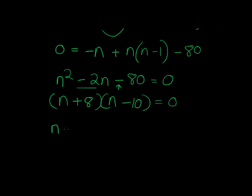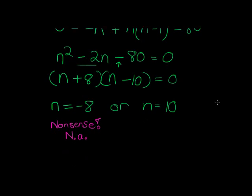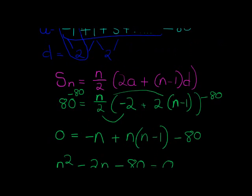Which means that N is now either equal to negative 8 or N is equal to 10. So, either I have negative 8 terms. Okay. That's impossible. This is nonsense. It makes no sense. Okay. We can't have negative terms. It's not applicable. Even though it's a good answer, it's not good for this specific scenario because we can't have negative terms. So, how many terms must I add up to get to 80? Well, 10 terms.